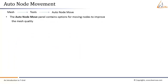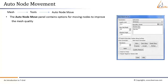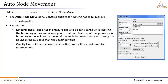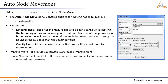The Auto Node Move panel contains options for moving nodes to improve mesh quality. Go to Mesh > Tools > Auto Node Move to open the panel. Parameters available include: Dihedral Angle — specifies the feature angle considered while moving boundary nodes to maintain geometry features; a boundary node will not be moved if the angle between faces sharing the boundary node is less than the specified value. Quality Limit — all cells above the specified limit will be considered for improvement. Improve Warp provides automatic warp-based improvement. Repair Negative Volume Cells repairs negative volume cells during automatic quality-based improvement.